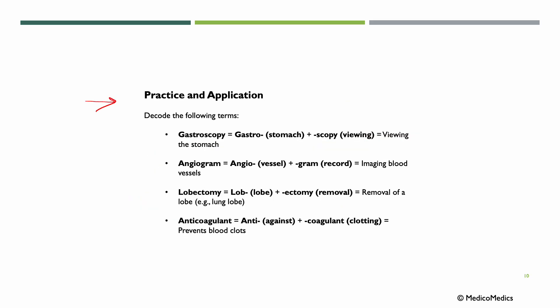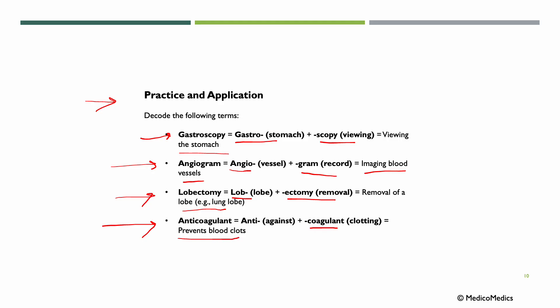Let's do some practice. Decode the following terms. Gastroscopy: 'gastro' is stomach, 'scopy' is viewing — so viewing of the stomach. Angiogram: 'angio' is vessel, 'gram' is record — so imaging blood vessels. Lobectomy: 'lobe' is lobe, 'ectomy' is removal — so removal of a lobe, for example a lung lobe. Anticoagulant: 'coagulant' means clotting, 'anti' is against — so anticoagulants prevent blood clotting.